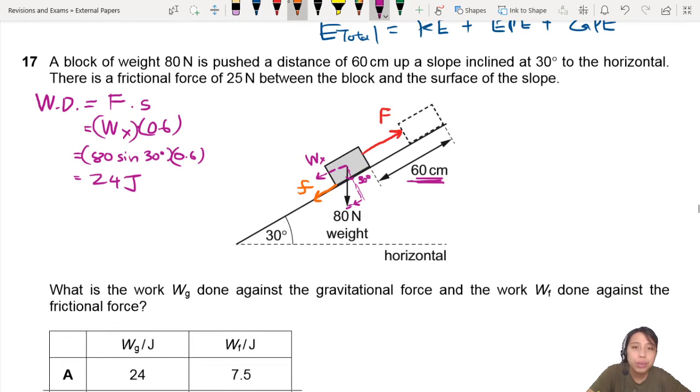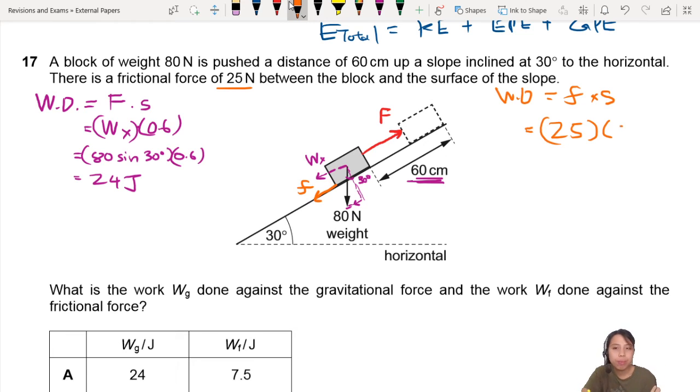Now the orange force we need to fight. Work done against the frictional force times how far you were pushing it. What is the frictional force? They told us 25 newtons. So that's 25 times how far you pushed it up, 0.6 meters. Please remember to convert to SI units. Otherwise, your answer will be wrong. This is 15 joules of energy.